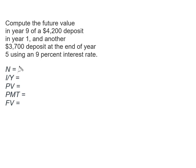So my N here is actually going to be 8. My I/Y is going to be 9. My present value is going to be that negative $4,200. I'm not making any payments along the way, just putting in that one chunk. So payment is zero and this is what I'm going to compute. So that's going to be for my first amount.